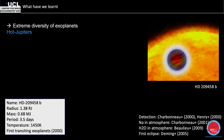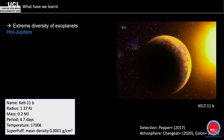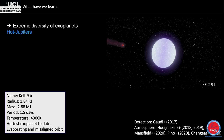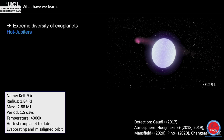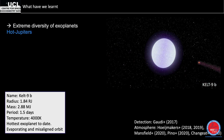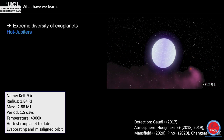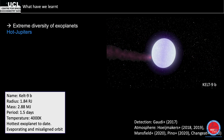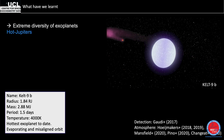KELT-9b is the hottest known exoplanet at about 4,000 K. It orbits a large A-type star very closely with a period of just 1.5 days. It's also evaporating — NASA's animation makes it look like a comet because of this — and it's in a misaligned orbit, with the star's rotation axis at roughly 90 degrees to the planetary orbit. How this planet ended up here is unclear.